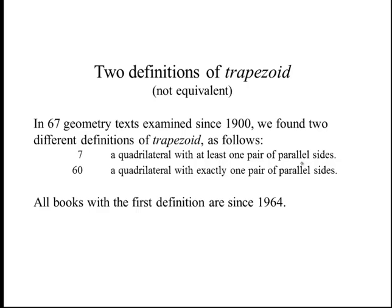Ultimately, terms mean what we define them to mean, and if there's some general consensus on these definitions, that makes the terms more universal. He also mentioned in his talk that if you looked at college geometry textbooks, they universally used the first definition — at least one pair of parallel sides — for a trapezoid.